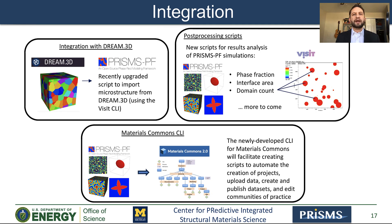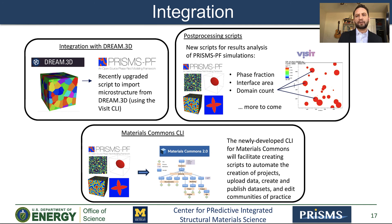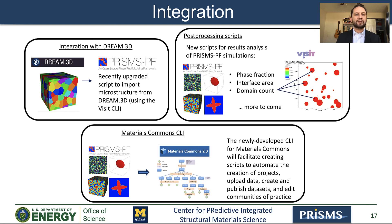Here are some of our recent efforts towards integrating PRISMS-PF with other computational tools. First, we have a recently upgraded script to import microstructure from Dream3D using the VisIt CLI, which is very useful for grain growth simulations. We have new post-processing scripts that take the output files from PRISMS-PF simulations and automatically calculate useful properties like phase fraction, interface area, and domain count, with plans to continuously add new scripts. Finally, the newly developed CLI for Materials Commons will facilitate creating scripts to automate the creation of projects, upload simulation results, create and publish datasets, and edit communities of practice.